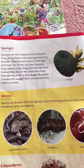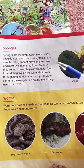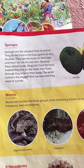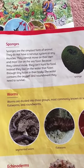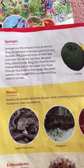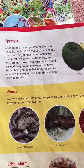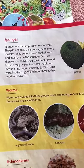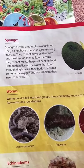The next class of invertebrates is Sponges. This is a very interesting class. Sponges are the simplest form of animals because they have no nervous system and no muscles. They can move from one place to another but are the most basic animal form.